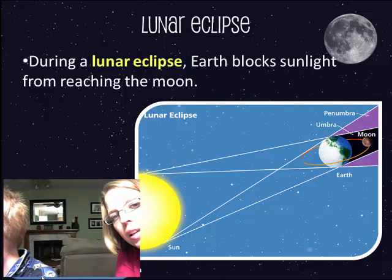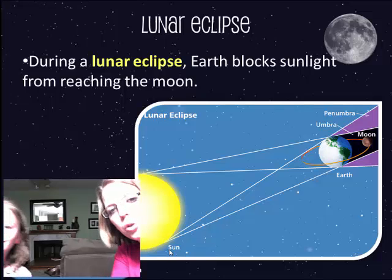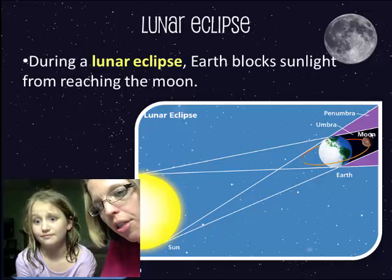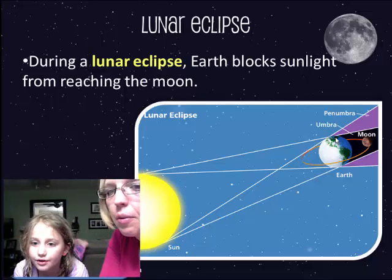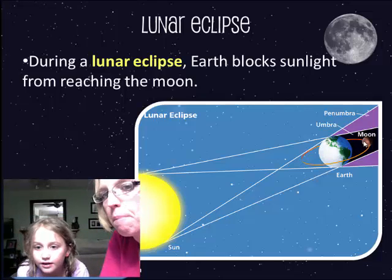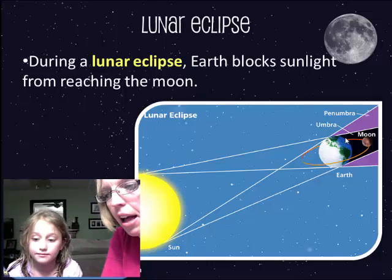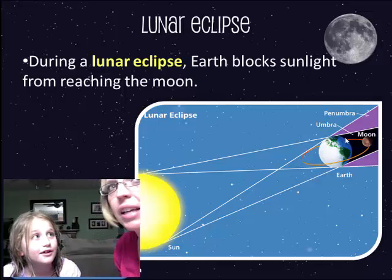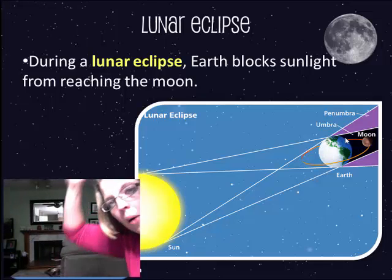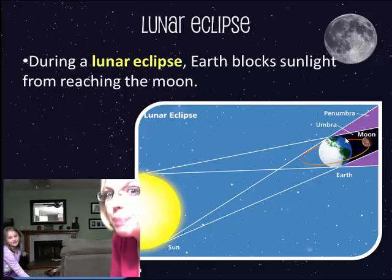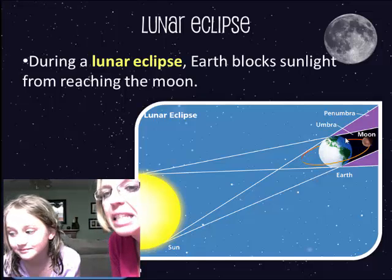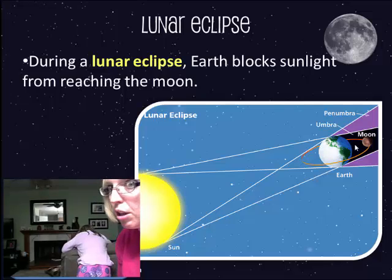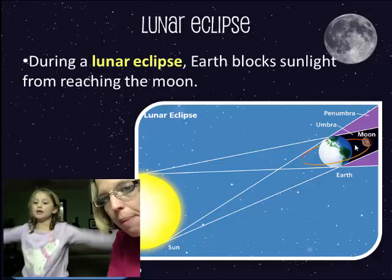A lunar eclipse happens more frequently than solar eclipses for different parts of the earth. During a lunar eclipse, the earth blocks the sunlight from reaching the moon. This happens more often because everybody on the night side of the earth is going to see the moon at the same time — so the whole side of the earth sees the lunar eclipse. The moon needs to be in the earth's umbra, the dark part of the shadow. Since the earth is bigger than the moon, it has a bigger shadow, a bigger umbra.